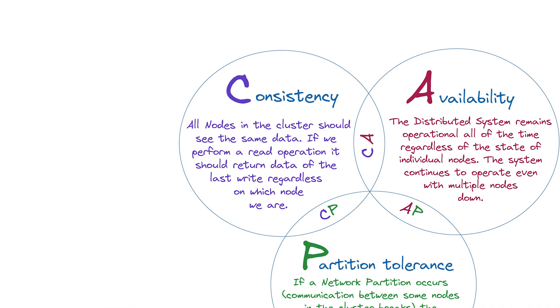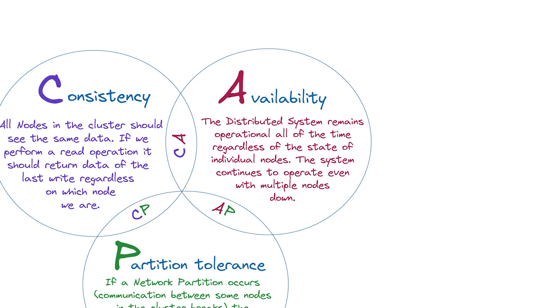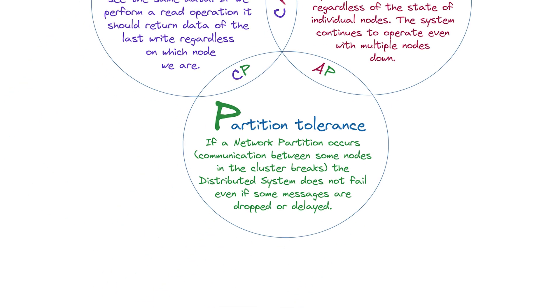Let's define what each property means. Consistency means that after you write data to the system, every read request from any node should return the same up-to-date information — everyone sees the same truth. Availability means the system always responds to requests; no matter what's happening behind the scenes, when you ask for data, you always get an answer. Partition tolerance means the system continues to work even when network failures split it into isolated groups of nodes. In a distributed system, partition tolerance isn't optional — it's bound to happen. Networks fail. It's not an if, it's a when. So when the network fails, the system still has to work, and now you're forced to choose between consistency and availability.